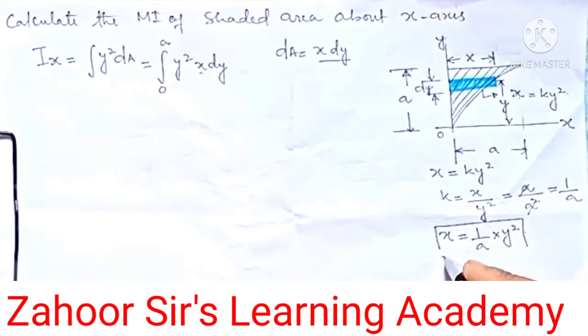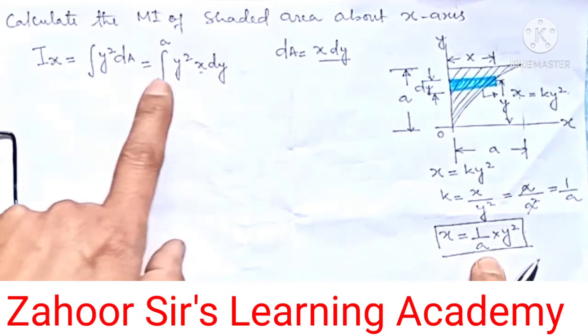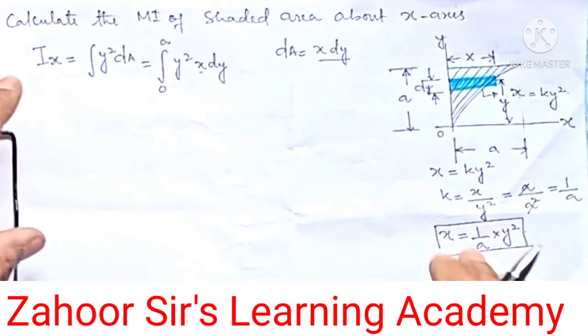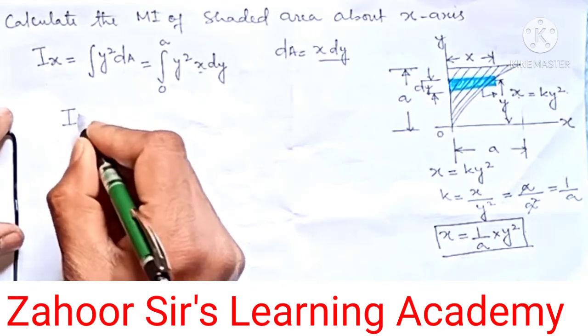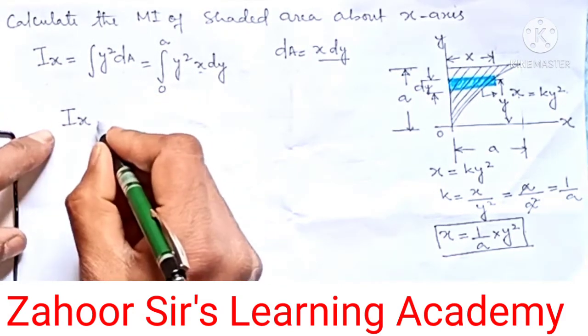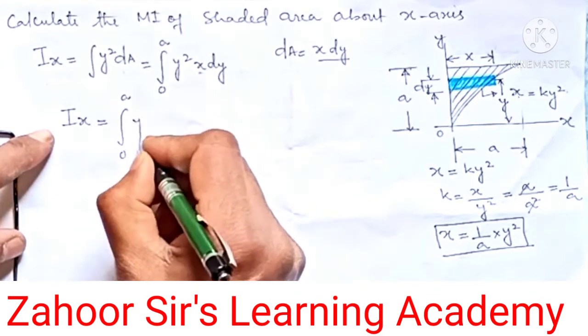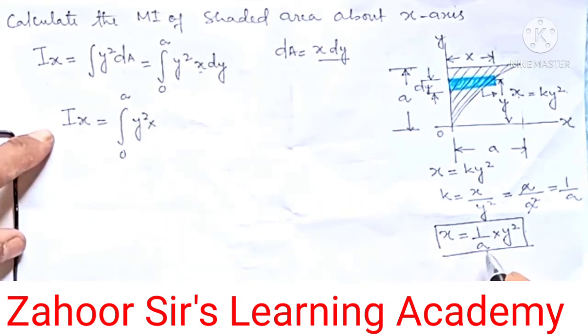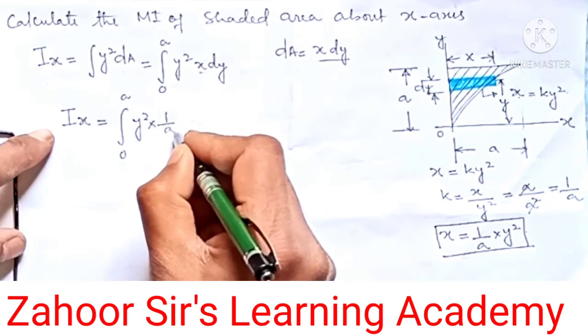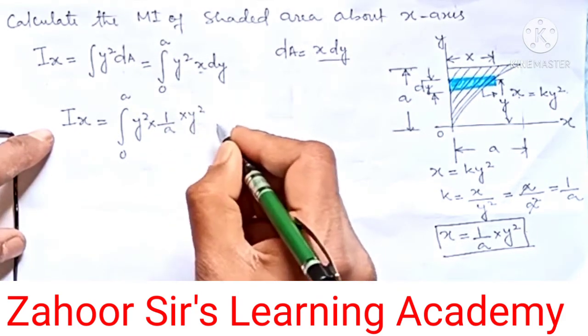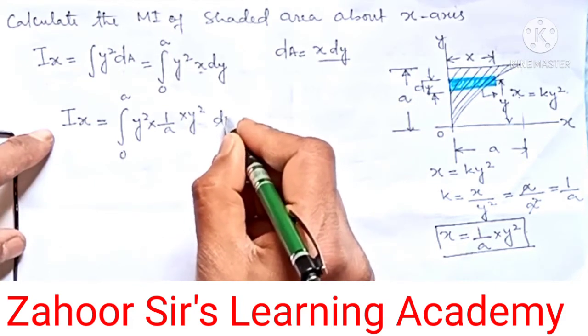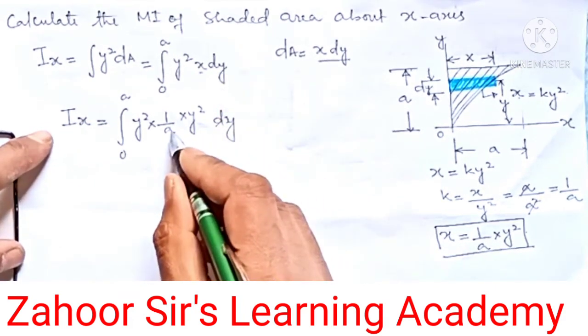Now let's substitute this directly in this equation. So Ix equals the integral from 0 to a of y squared. Instead of x, we write the value of x, which is (1/a) times y squared dy. This will go out because it's a constant, that means 1/a.